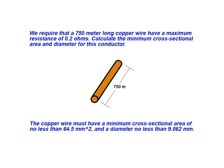We conclude that our copper wire must have a minimum cross-sectional area of no less than 64.5 millimeters squared, and a diameter of no less than 9.062 millimeters.